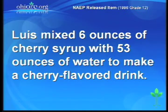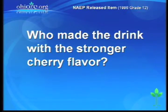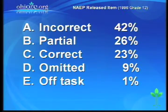Brian, we need to move on to a National Assessment of Educational Progress item. This is from the 12th grade 1996 release test. It says: Lewis mixed 6 ounces of cherry syrup with 53 ounces of water to make a cherry-flavored drink. Martin mixed 5 ounces of the same cherry syrup with 42 ounces of water. Who made the drink with the stronger cherry flavor? Give mathematical evidence to support your answer. This is a short-answer constructive response item. 42% got no points, 26% got partial credit, 23% got full credit, and about 10% omitted it — so only about 50% received some or full credit.